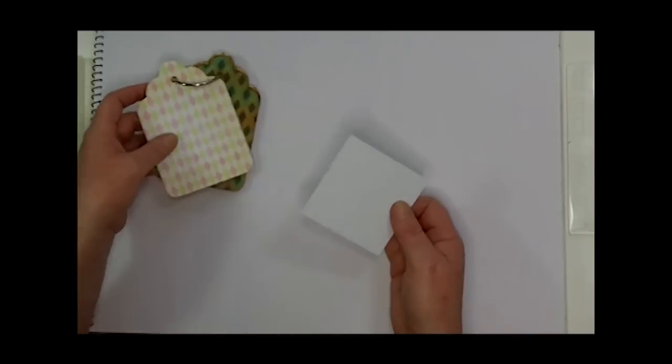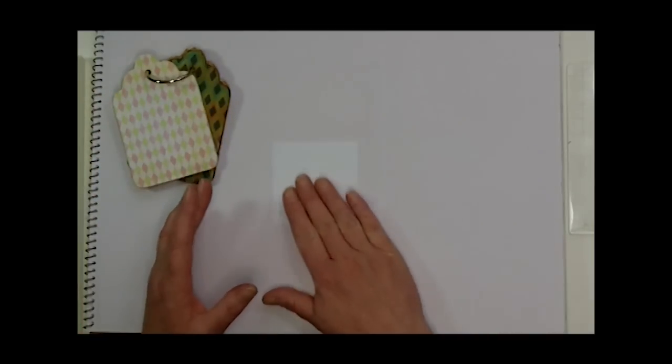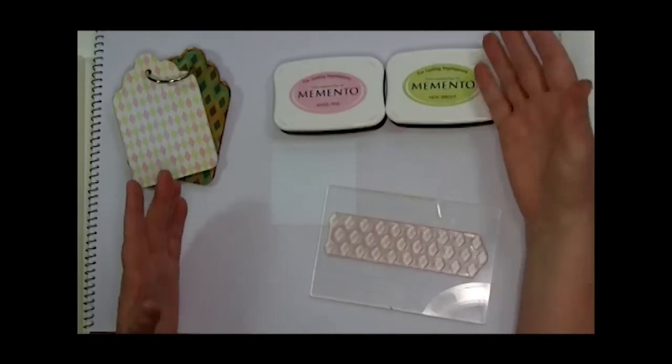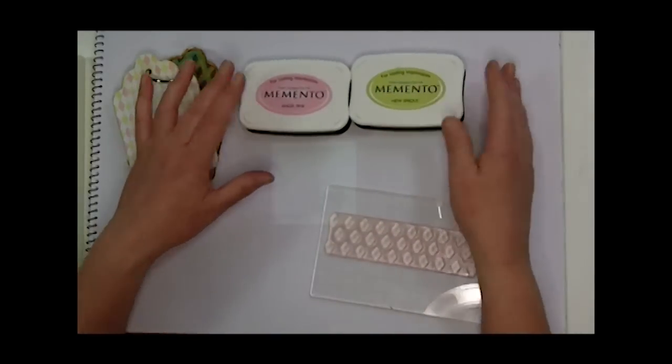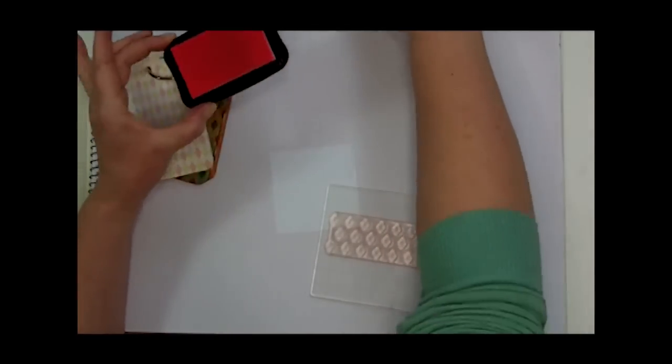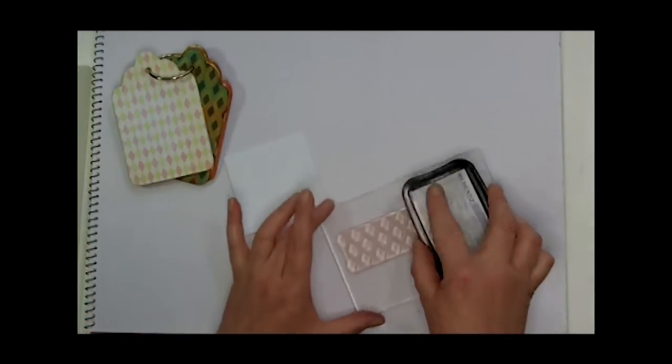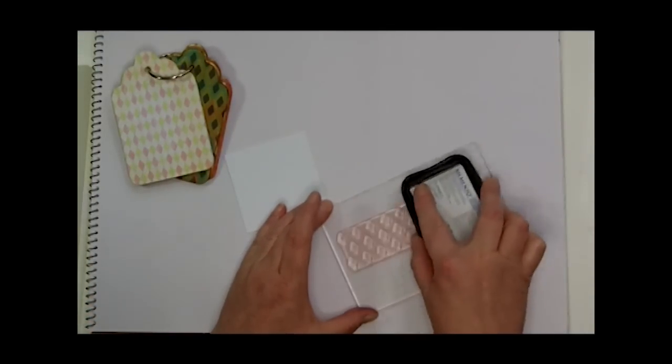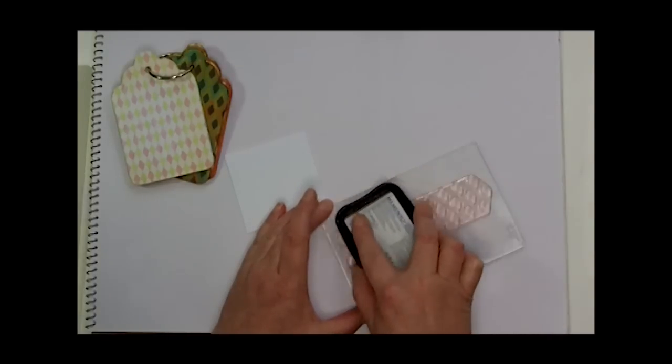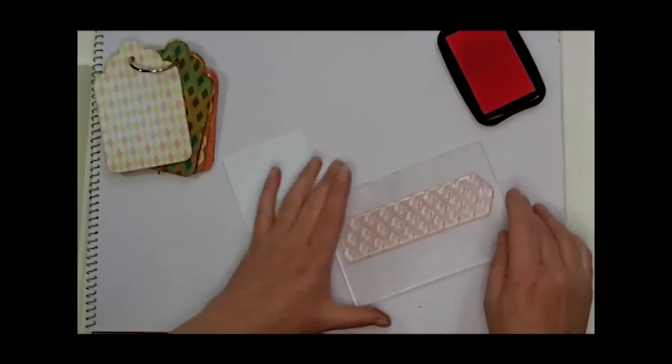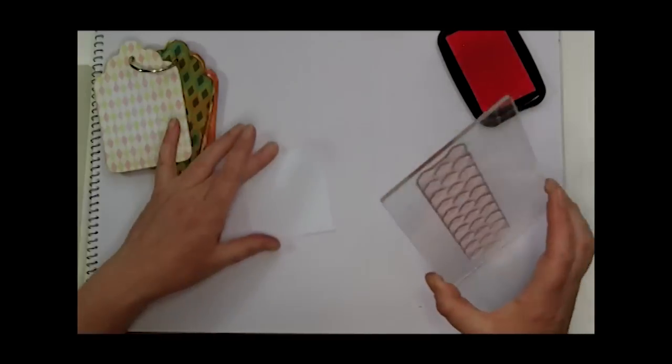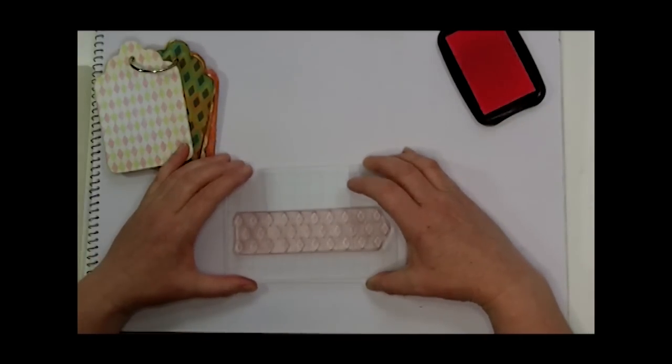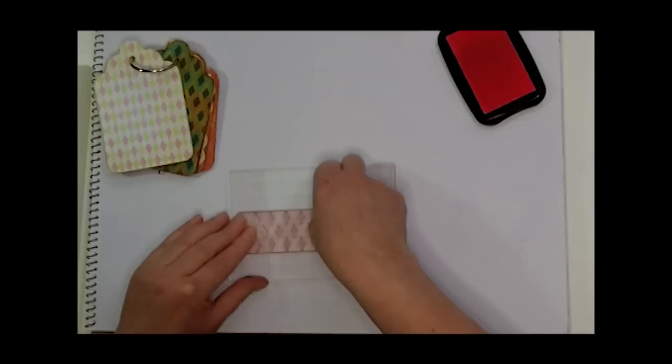A really nice simple design to do and I'm just using scraps today. We're using Memento ink and I've got Angel Pink and New Sprout which are really lovely soft springtime colors. We're inking up the small diamond set. You can't really see the ink on this but it is so pale it doesn't show up on the stamp but obviously it's going to show up really well on the card. There we go. Quite a lot of pressure.